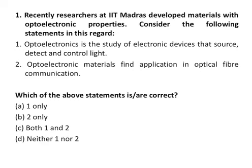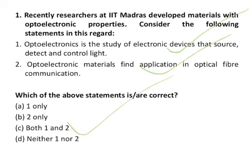The first question says recently researchers at IIT Madras developed materials with optoelectronic properties. Consider the following statements. The first says optoelectronics is the study of electronic devices that source, detect and control — this statement is correct. The second says optoelectronic materials find application in optical fiber communication — this statement is also correct. Both statements 1 and 2 are correct; this is the correct answer.